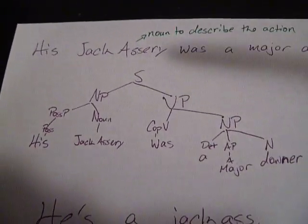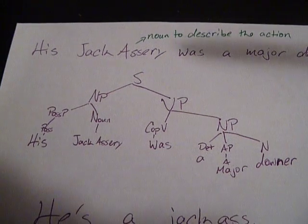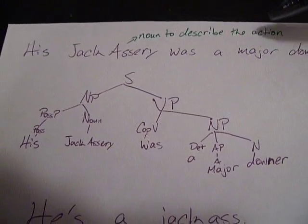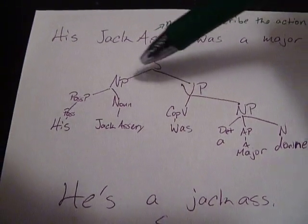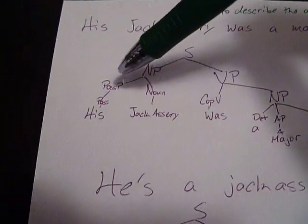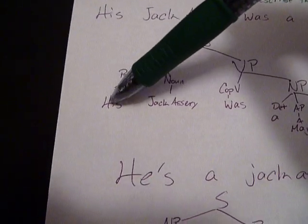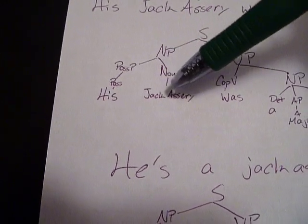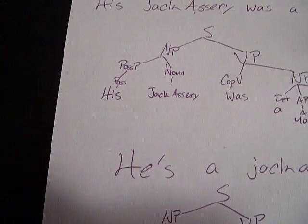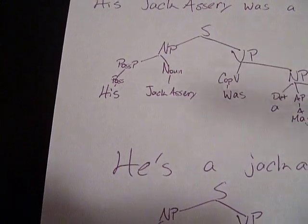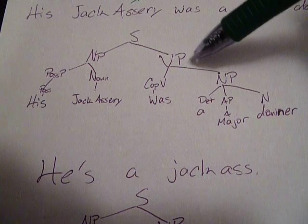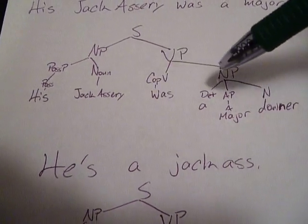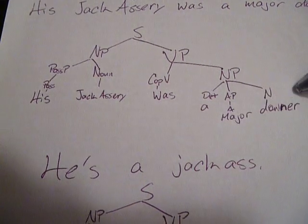So then we go up here and think: what's going on with 'jackassery'? We've changed 'jackass,' which is a noun — well, it's actually a noun used to describe the action. You have your sentence, your noun phrase, then your possessive phrase and possessive 'his.' Now possessives only possess nouns. So your noun phrase goes down to the noun 'jackassery,' because you can't say 'his happy' — you have to say 'his happiness.' Then you have the copulative 'was' equaling your noun phrase 'a major downer.'